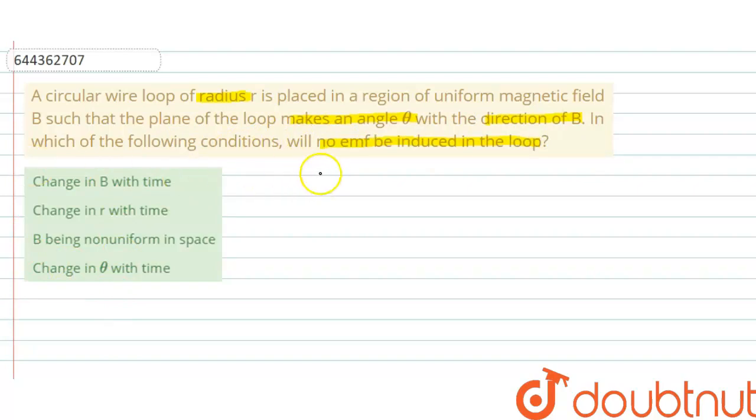So there are 4 options given. As we know that induced EMF depends on the rate of change of flux. So magnetic flux phi is equal to B dot area vector, means B into A into cos theta,